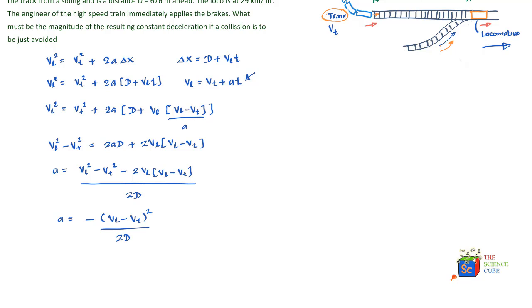If you substitute the values which have been given, what you get is a = -(29 km/hr - 161 km/hr)²/(2 × 0.676 km). Mind it, we're taking kilometers per hour here instead of the usual meters per second. This equals -1,808 km/hr².